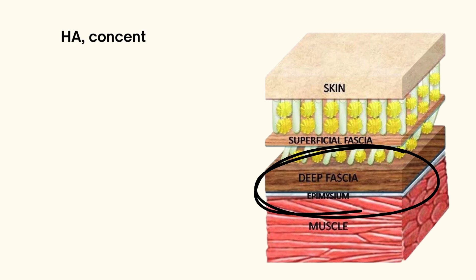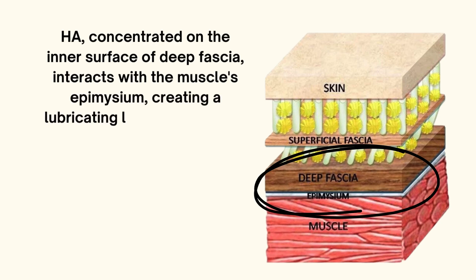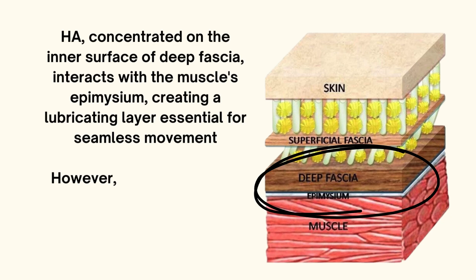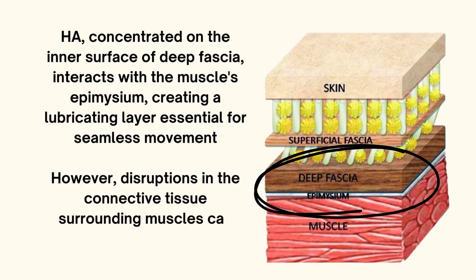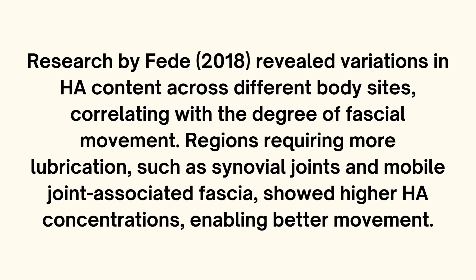Hyaluronin is concentrated on the inner surface of the deep fascia. It interacts with the muscles, creating a lubricating layer which is essential for seamless movement. However, if you have disruptions in the connective tissue surrounding the muscles, this can actually disrupt this interface of hyaluronin, and it hinders the fascial gliding that we have.